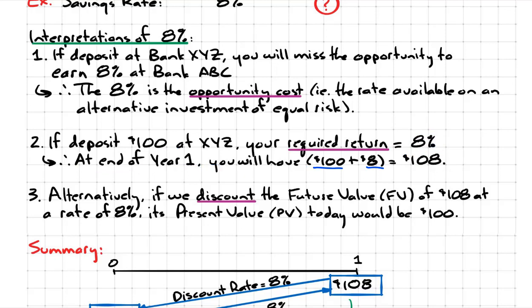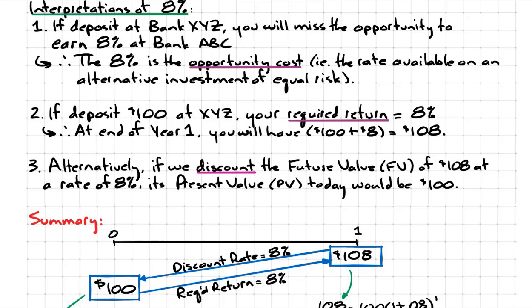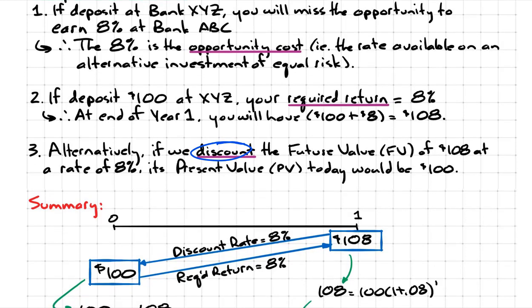Now the third interpretation of this 8% is as follows: if we discount the future value of $108 at a rate of 8%, its present value today would be $100. So the third interpretation of the 8% is that it's a discount rate. You can see why it's called the discount rate because we're going from 108 to 100—you're discounting.